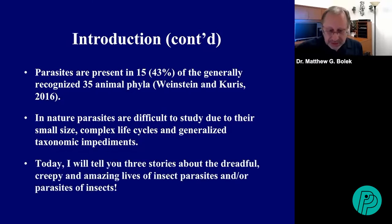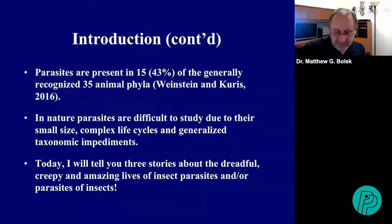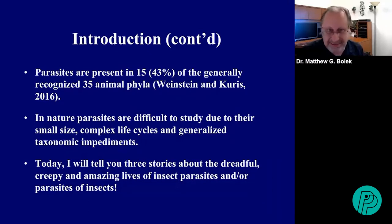Parasites are present in about 43 percent of the generally accepted 35 animal phyla. It's really suggested that parasitism is probably the most common way of life. Unlike free-living organisms, parasites are difficult to study due to their small size, complex life cycles, and general taxonomical impediments. As a result, it is not very common to know much about their general biology compared to free-living organisms.